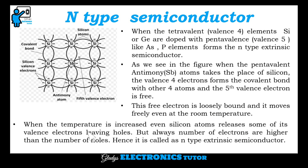This free electron is loosely bound and moves freely even at room temperature. When the temperature is increased, even silicon atoms release some of their valence electrons, leaving holes. But always the number of electrons is higher than the number of holes. Hence, it is called N-type extrinsic semiconductor.